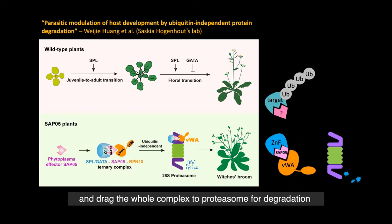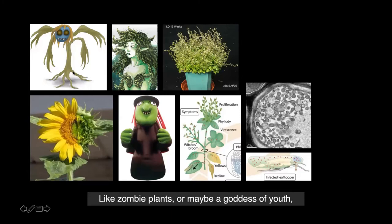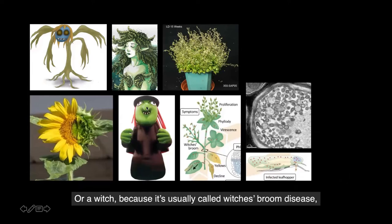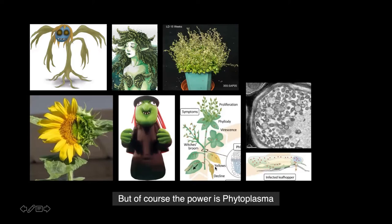When Wei-Jie and I talked about what to include in the cover image, we thought about some concepts — like zombie plants, or maybe a goddess of youth, because the infected plant stays in vegetative stage and keeps growing more shoots, or a witch, because it's usually called witch's broom disease. And of course, the symptoms like phyllody are pretty amazing, with massive shoots, and the mysterious power that affects both leafhoppers and plants — and of course, that power is phytoplasma.